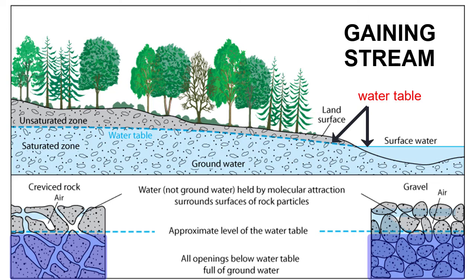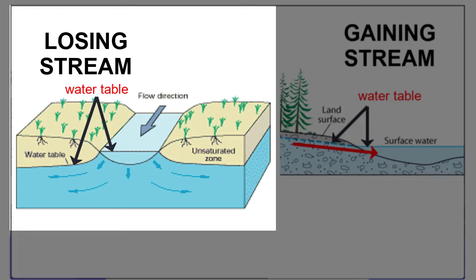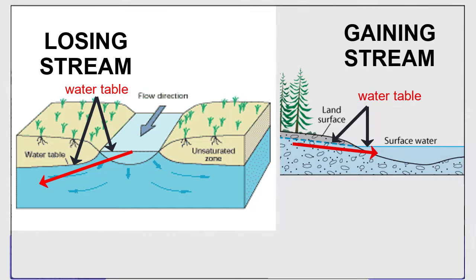When the water table is higher than a river, groundwater will flow into the river — we call that a gaining stream. When the water table is lower than the top of the river, then water from the river will soak into the ground and move into the aquifer — we call that a losing stream. As streams and rivers wind through various land regions on their way to the oceans, they may change from losing streams to gaining streams and back again depending on the water table of the land through which they travel.